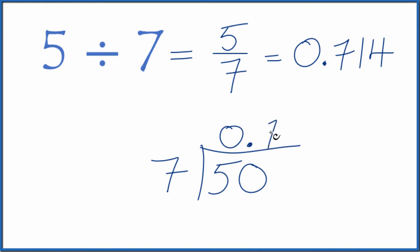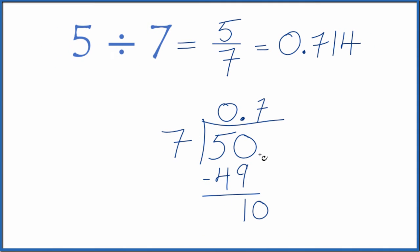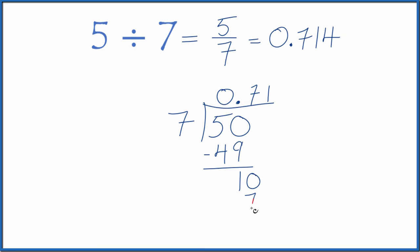7 times 7, that's 49. So when we subtract, we have just 1. Since 7 doesn't go into 1, we can call it 10 and move over a decimal place. 1 times 7, that's 7.